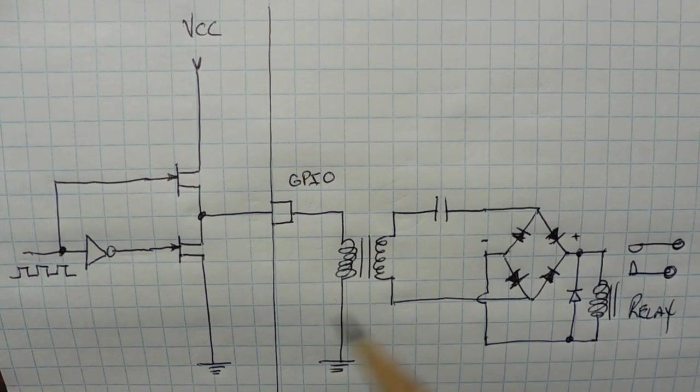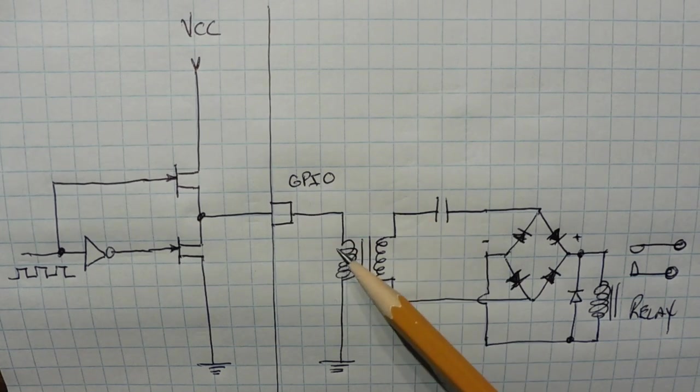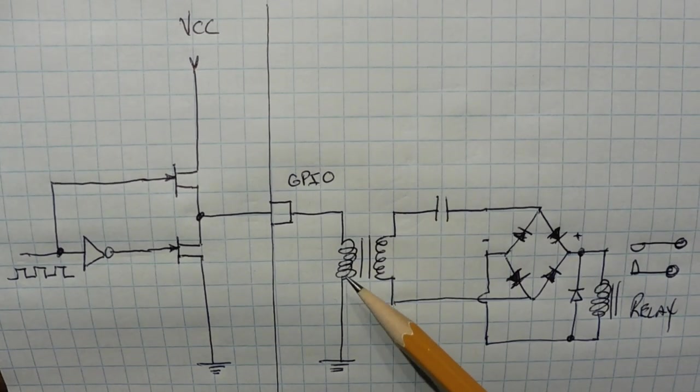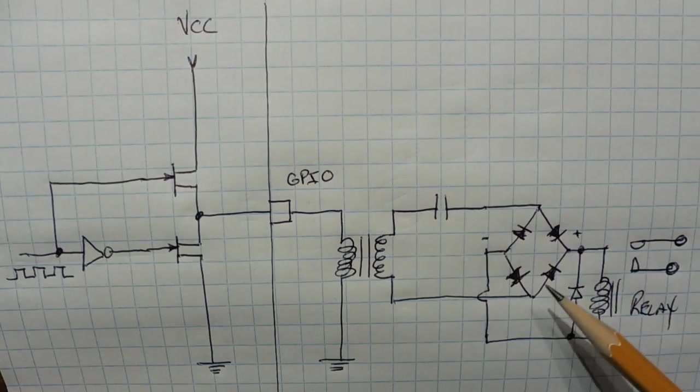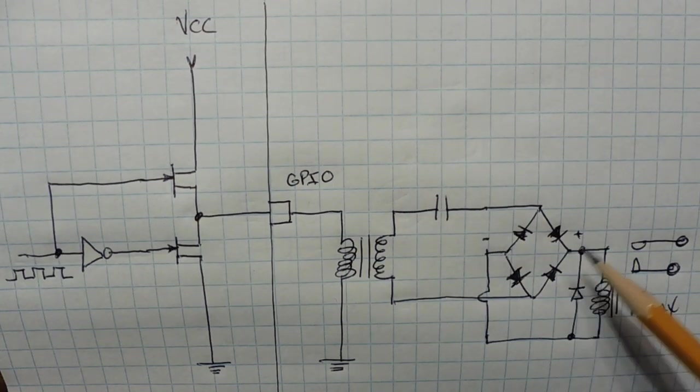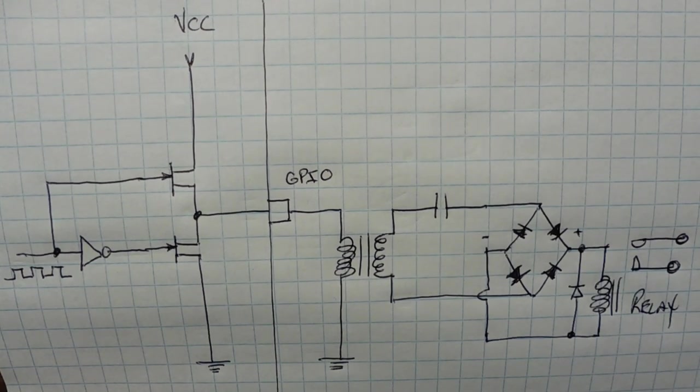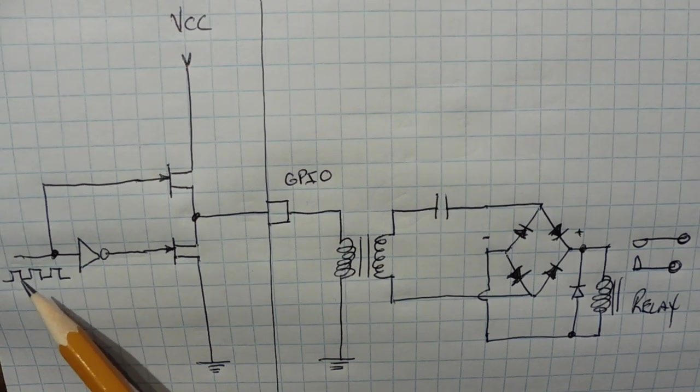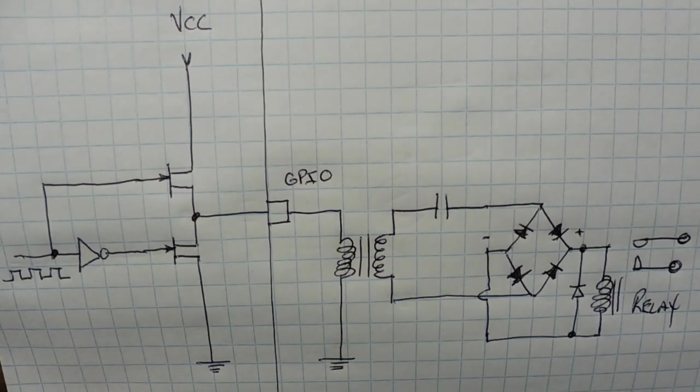Now to turn on the relay, we send a pulse train to the GPIO pin, say 1 kHz. Now that will send a varying magnetic field into the primary of the transformer and we will get an AC output on the secondary which will be rectified by the bridge rectifier. And we will get a DC output which will drive the relay. Now to shut off the relay, we just turn off the 1 kHz drive to the GPIO and it can either be low or high and it will turn off the relay.